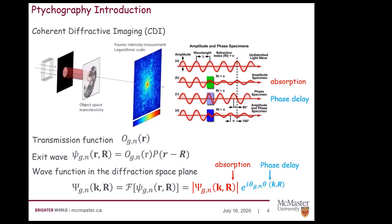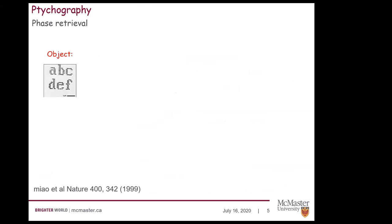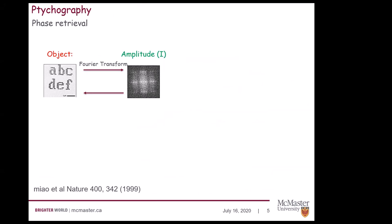We only record the amplitude information — we can call it absorption — from the detector. The diffraction pattern is a Fourier transform of the real object, but we lose the phase information. Although the diffraction pattern is a Fourier transform of the illuminated object, and one might think to simply apply an inverse Fourier transform to recover the object, we cannot do that because we have no idea about the real object. All we know is the intensity of the diffraction pattern — we don't have the phase.